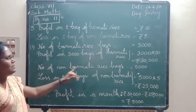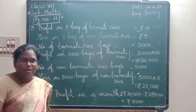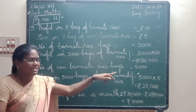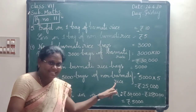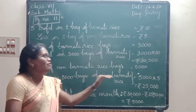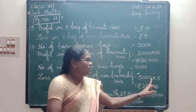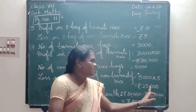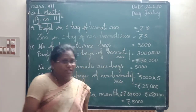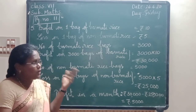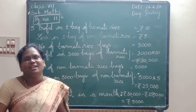Next, number of non-basmati rice bags: 5,000 bags. Loss on 5,000 bags of non-basmati rice: 5,000 into 5. 5 fives are 25, with 3 zeros on the right side of 25, so that is 25,000. Now, profit is 30,000 and loss is 25,000. Which is higher? Profit is higher.